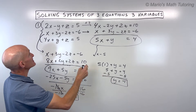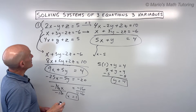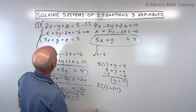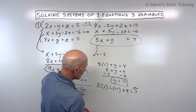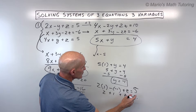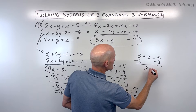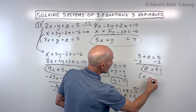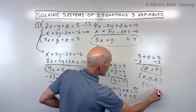Now we have x and y, we just need z. You can substitute into any one of the original three equations and get the same answer. I'm going to use the top equation: 2 times x (which is 1), minus y (which is negative 1), plus z equals 5. Simplifying: 2, and a negative times a negative is a positive 1, giving 3 plus z equals 5. Subtracting 3 from both sides gives z equals 2. Now we have x, y, and z, so we write it in alphabetical order as a triple: x equals 1, y equals negative 1, z equals 2.